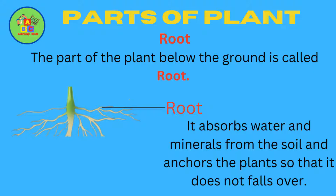The part of the plant below the ground is called root. It absorbs water and minerals from the soil and anchors the plant so that it does not fall over.